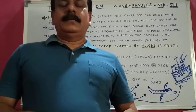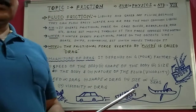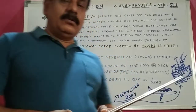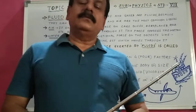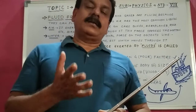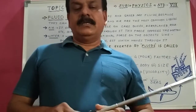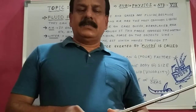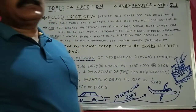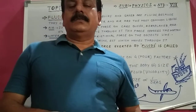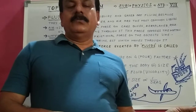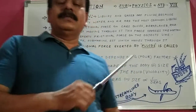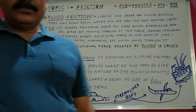Note down all these things in your physics copy — it is essential, along with the drawings. There are copy marks of five marks for each periodic test one and periodic test two, so it is required to note everything down. Till then, goodbye and note down all these things. Thank you.